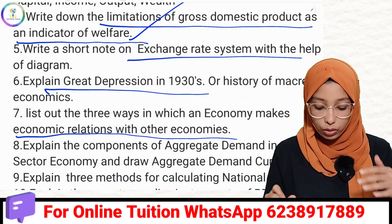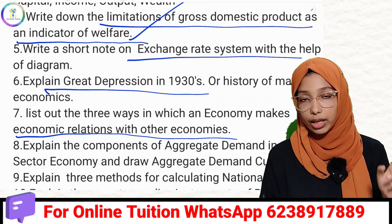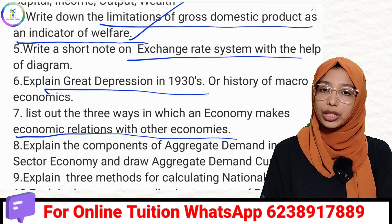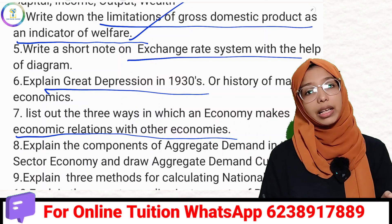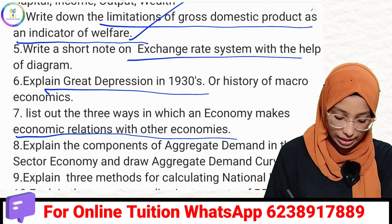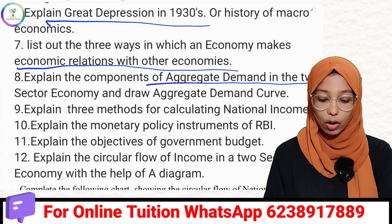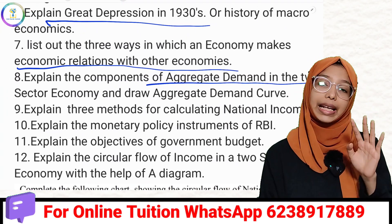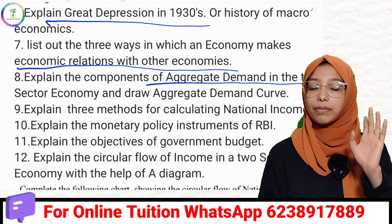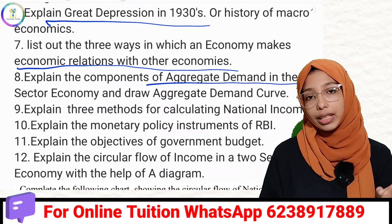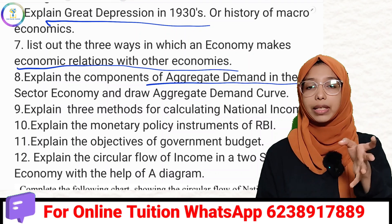The three factors of the economy will also be covered. Then, explain the components of aggregate demand in a two-sector economy. In the two-sector economy, aggregate demand has two components: consumption and investment. The aggregate demand equation is: AD = C̄ + Ī + cY.